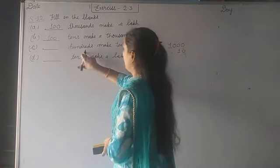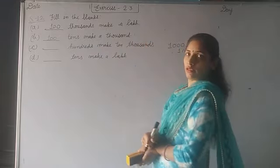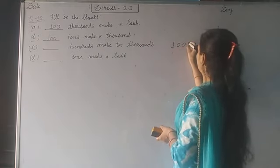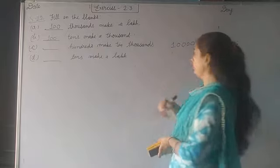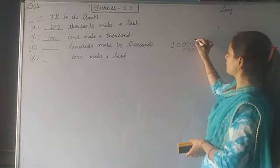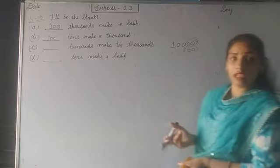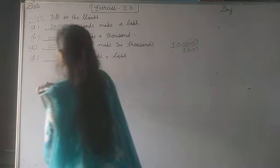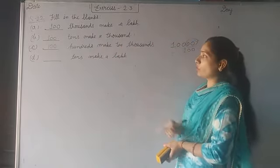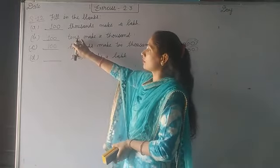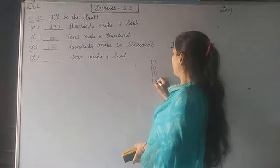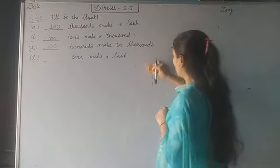Next: dash hundreds make ten thousand. Write ten thousand first. Then hundred. In hundred there are two zeros. Cross two zeros from here as well. What is left? Again left hundred. So hundred hundreds. If we add hundred a hundred times, it will make ten thousand. Like this, if we add tens a hundred times, the number 10 added a hundred times will make one thousand.